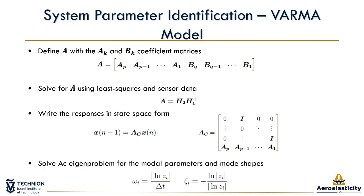To make a long story short, the main idea of the identification process includes defining a vector of unknown matrices and solving the problem using a least-squares estimator. Then we can take the AK matrices and form the companion matrix, which represents the dynamics of the aeroelastic system. The last step is to solve the eigenvalue problem for the companion matrix and get the poles. With simple math, we can explicitly get the frequency and the damping of each mode.